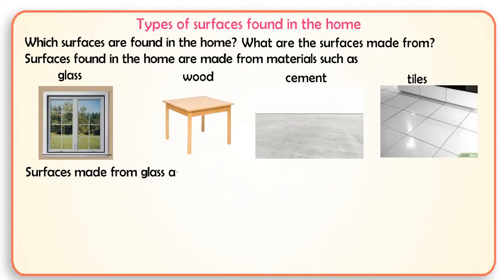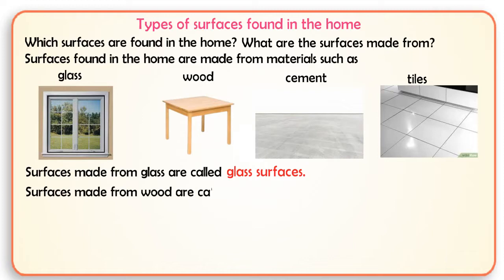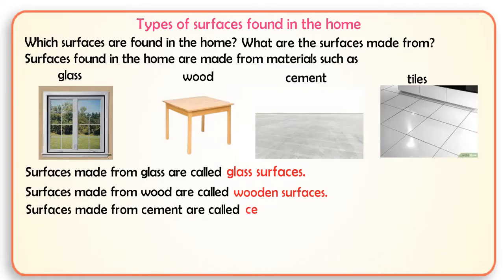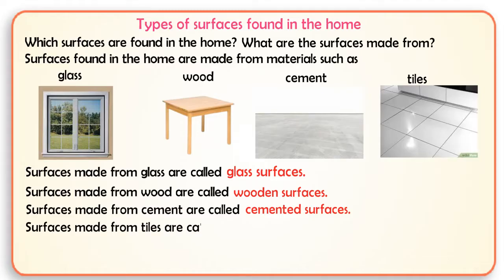Surfaces made from glass are called glass surfaces. Surfaces made from wood are called wooden surfaces. Surfaces made from cement are called cemented surfaces. Surfaces made from tiles are called tile surfaces.